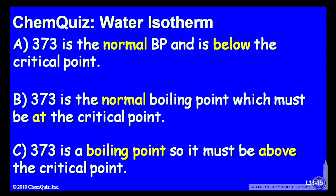Let's look at a possible explanation for each answer. A, 373 is the normal boiling point and is below the critical point. B, 373 is the normal boiling point, which must be at the critical point. Or C, 373 is a boiling point, so it must be above the critical point. Think about those three explanations and make a selection.